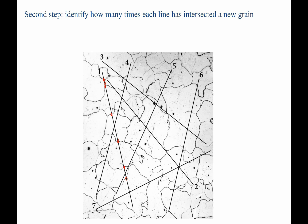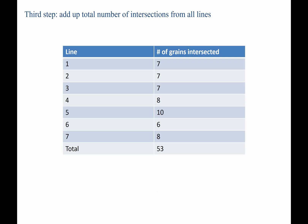Let's do line number 2. Again, we're going to add these up: 2, 3, 4, 5, 6, 7. You'd add these up for all 7 different lines. Once you've done so, we reach our third step, which is to add up the total number of intersections from all of these lines.